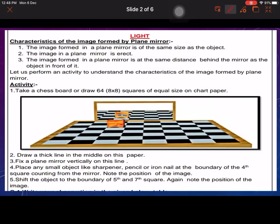Characteristics of the image formed by plane mirror. The image formed in a plane mirror is of the same size as the object. The image in a plane mirror is erect. The image formed in a plane mirror is at the same distance behind the mirror as the object in front of it. As far as the object is, the image becomes the same.